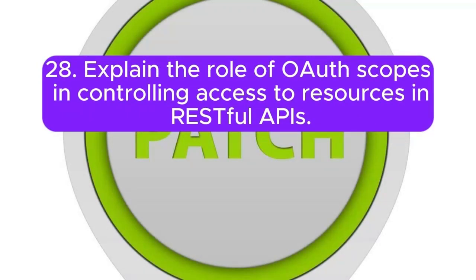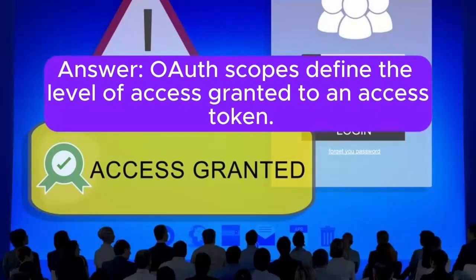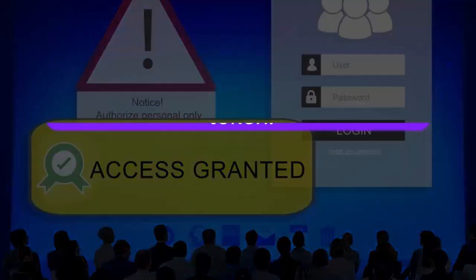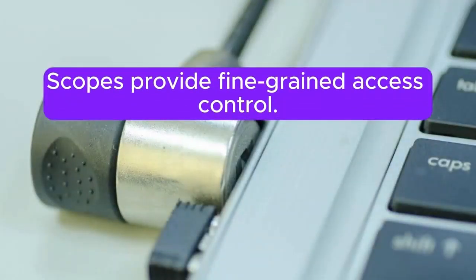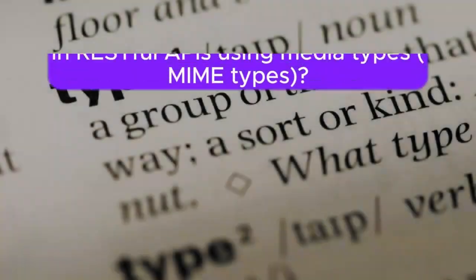Question 28: Explain the role of OAuth scopes in controlling access to resources in RESTful APIs. OAuth scopes define the level of access granted to an access token. They specify what actions or data the token holder can perform or access, providing fine-grained access control.